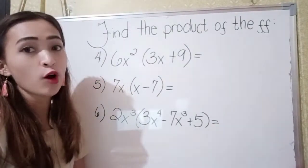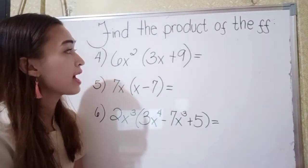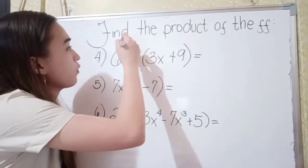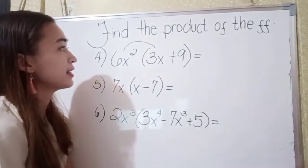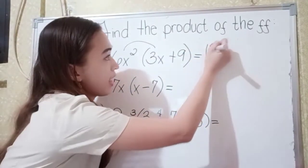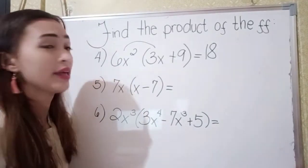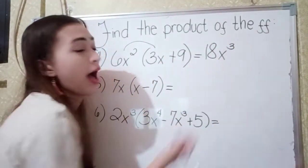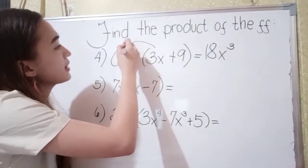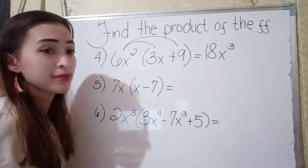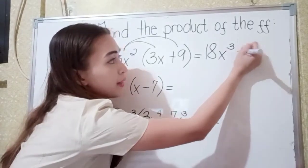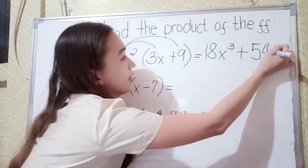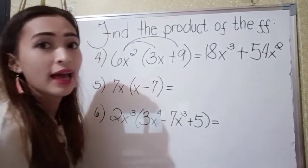For number 4, we have 6x squared times 3x plus 9. Again, we will use the distributive property. So 6x squared times 3x: 6 times 3 is 18, and we add the exponents of x — 2 plus 1 is 3 — giving us 18x cubed. Next, 6x squared times 9: since this is positive, 9 times 6 is 54, so we have 54x squared.